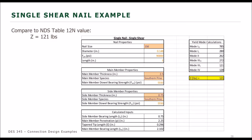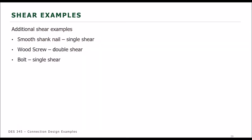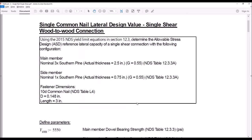Using the NDS equations for shear, I ran a quick Excel spreadsheet example for a 10D nail in a 3x main member — actual thickness of 2.5 inches — and a 1x side member. It spit out an unadjusted Z of 121 pounds. Keep that in mind because we're going to take the same example and jump into MathCAD to show a little bit more of the nitty gritty.